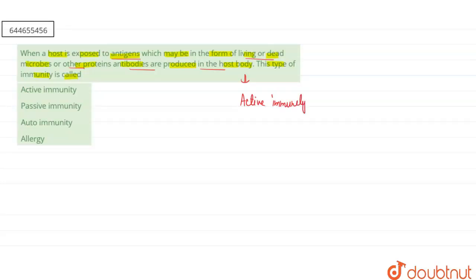This is an example of active immunity. In active immunity, there is the direct exposure to the pathogen. Here we can directly expose the pathogen to the organism for providing the immunity, and in response to the pathogen, our body will produce the antibodies.